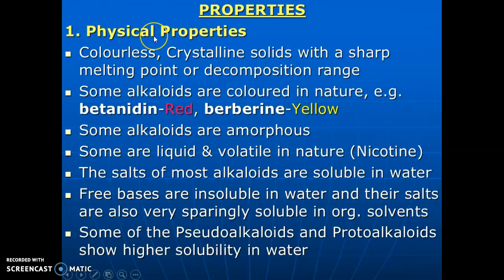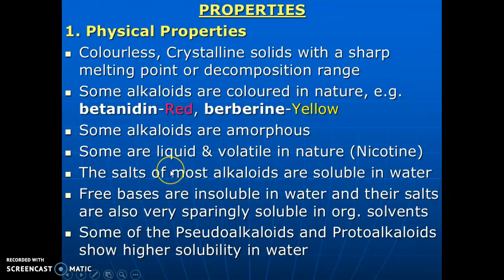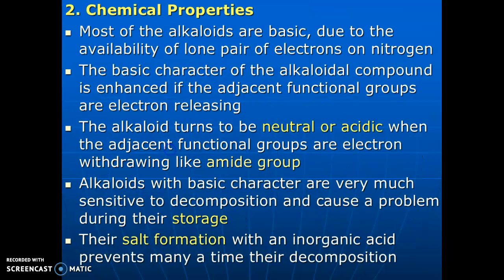Properties of alkaloids — physical properties: they are colorless crystalline solids with a sharp melting point or decomposition range. Some alkaloids are colored — for example, betaine which is red in color and berberine which is yellow in color. Some alkaloids are amorphous in nature. Some are liquid and volatile, for example nicotine. The salts of most alkaloids are soluble in water. Free bases are insoluble in water and their salts are sparingly soluble in organic solvents. Some pseudo-alkaloids and proto-alkaloids show higher solubility in water.